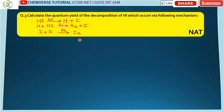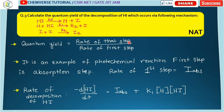The third question asks us to calculate the quantum yield of the decomposition of HI. The mechanism steps are: (1) HI + hν → H + I (absorption, primary step), and (2) H + HI → H₂ + I (secondary step). Quantum yield is the rate of the overall process divided by the rate of the primary step. In photochemical reactions, the first step is always the absorption step, and its rate is expressed as Iabs (absorbed intensity).